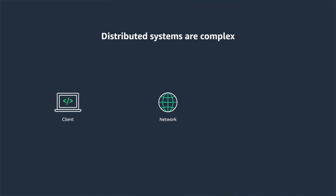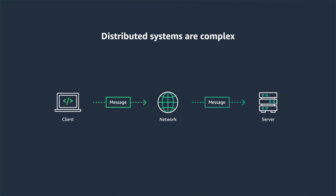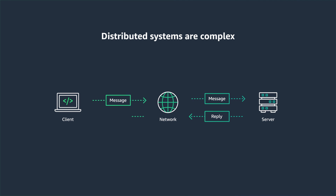Even simple distributed systems are complex. Let's take a look at simple client-server communication. There are a lot of steps involved to complete a single round trip successfully: the client puts a message into the network, the network delivers the message to the server, the server validates the message and updates its state if required, the server puts the reply onto the network, the network delivers the reply to the client, and the client validates the reply and updates its state if required. There are so many permutations of failure that can happen in this simple distributed system.